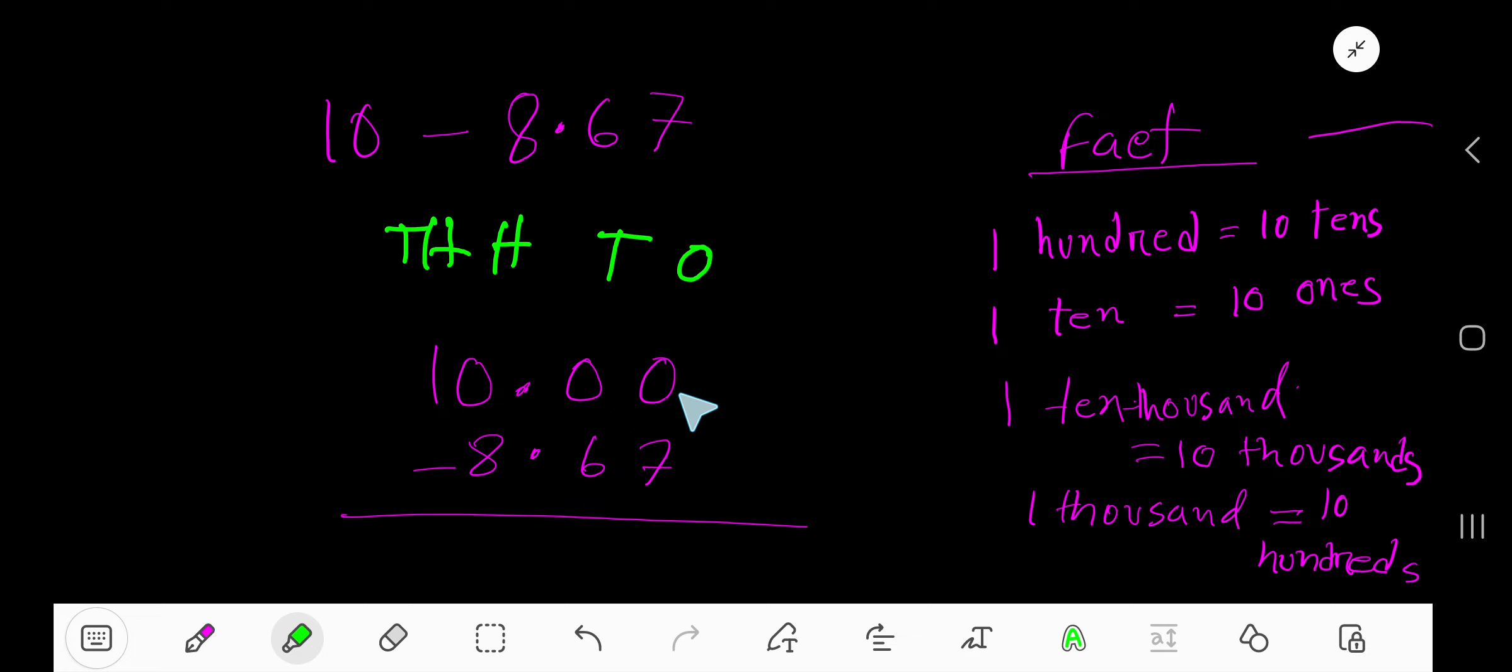Go to the next column - you cannot borrow from zero, so you have to borrow from the thousands column. If you borrow one thousand, you will have zero thousands. One thousand means ten hundreds. If you borrow one hundred, you will have nine hundreds, and one hundred equals ten tens. If you borrow one ten, you will have nine tens, and one ten will be ten ones.